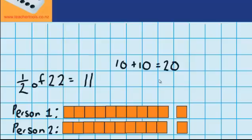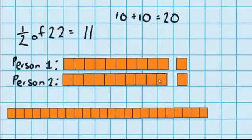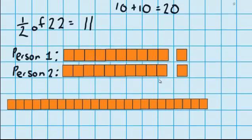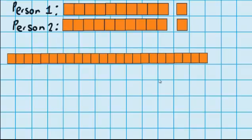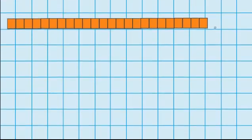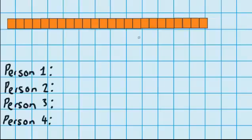Let's try another question where we can use our repeated addition facts. Here I've got 24 blocks, but this time I want to share those 24 blocks between 4 people. So I'm splitting this amount into 4 groups, and I can record that like this — I'm trying to find 1 quarter of the 24 blocks.